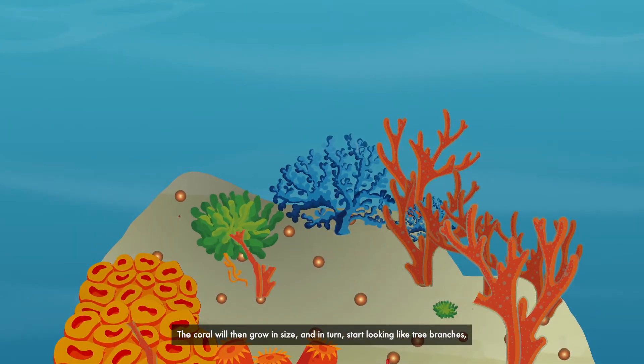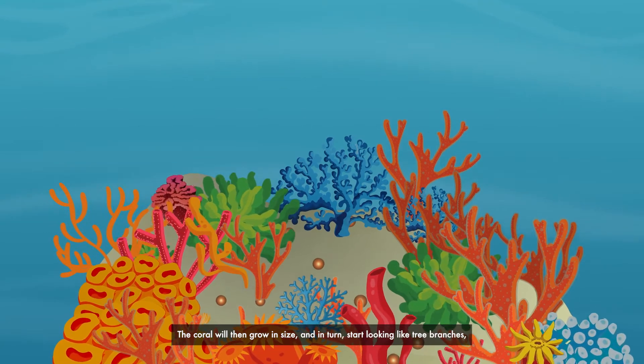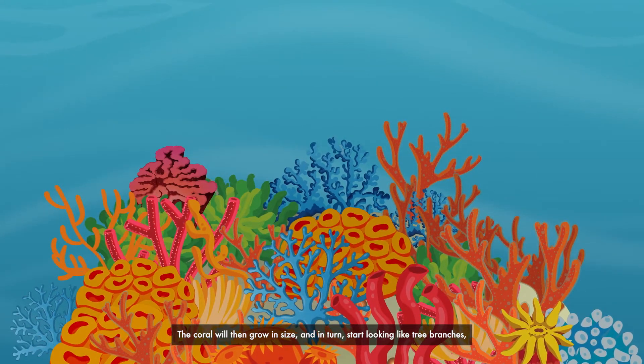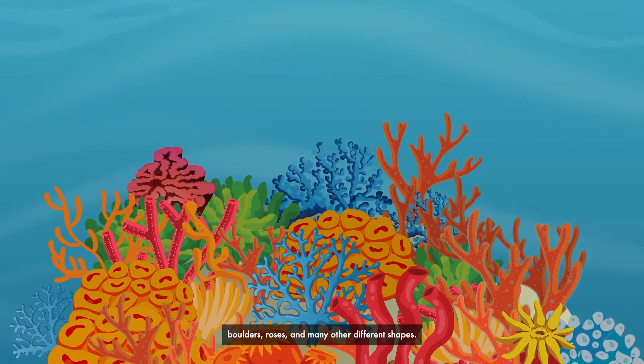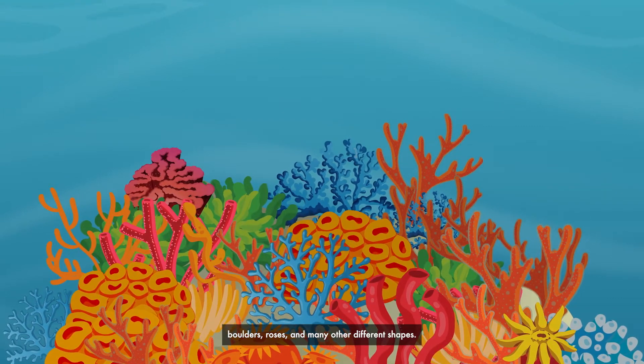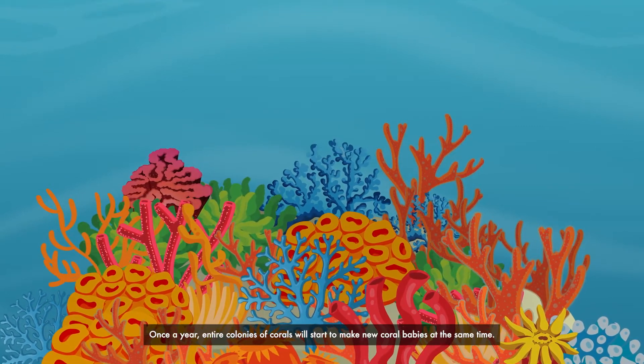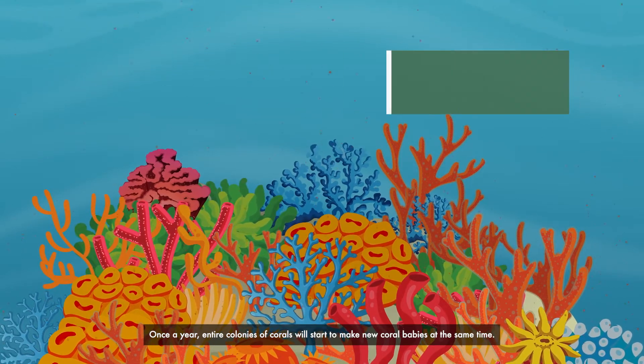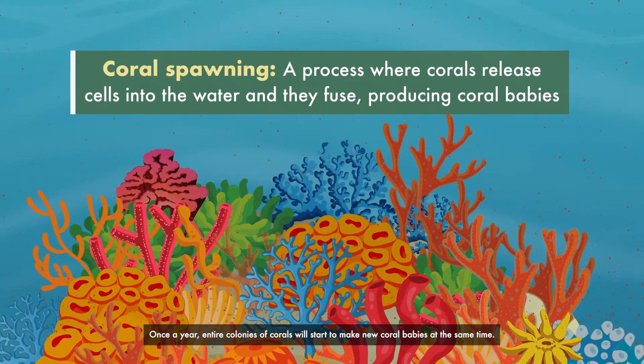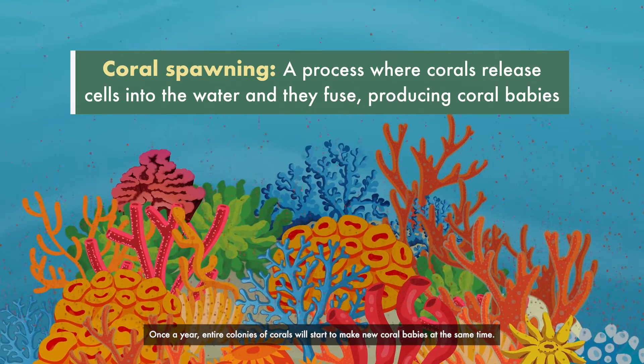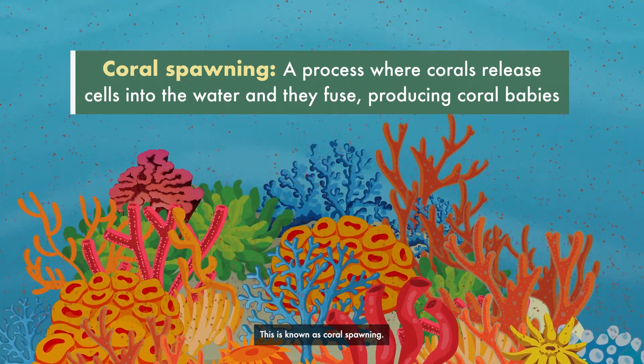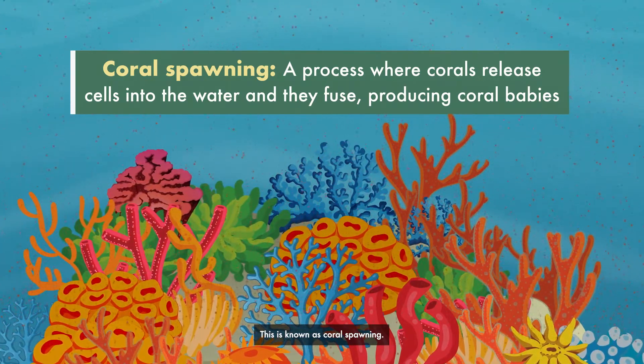The coral will then grow in size and in turn start looking like tree branches, boulders, roses, and many other different shapes. Once a year, entire colonies of corals will start to make new coral babies at the same time. This is known as coral spawning.